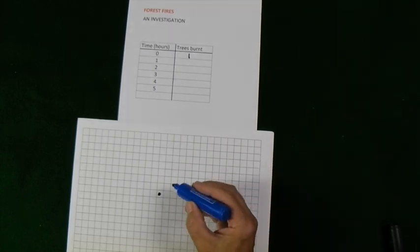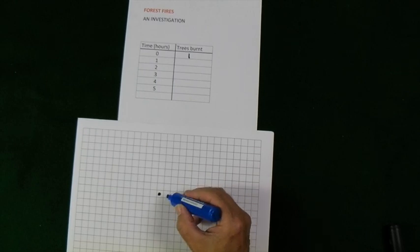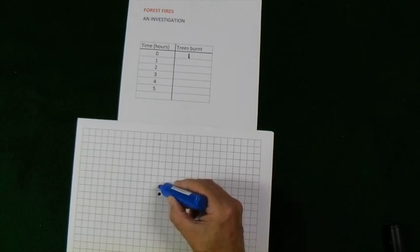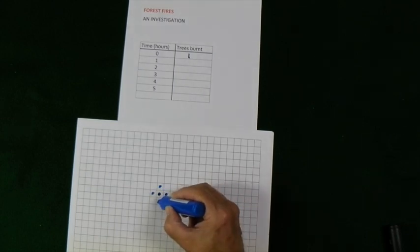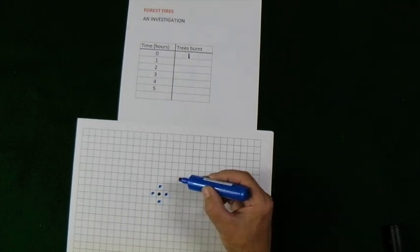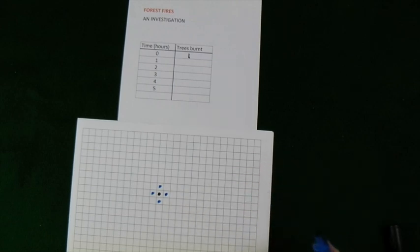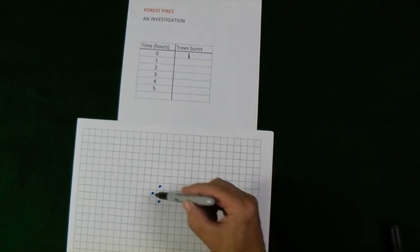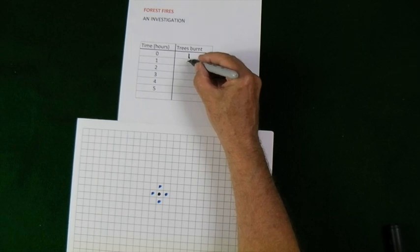I'm going to use blue and hopefully you'll be able to tell the difference between the original one in black and here's blue. So that catches fire, that catches fire, that catches fire, and that one does also. The diagonal trees don't catch fire in this particular model. We've now got five trees burning or burnt.